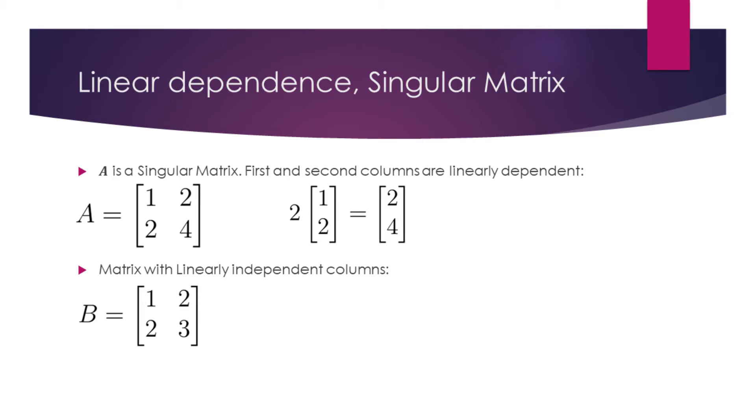In the bottom example, it is impossible to linearly combine columns to obtain other columns. Hence, this matrix is said to have linearly independent columns.